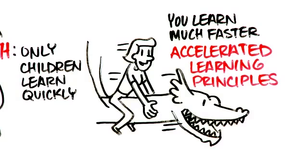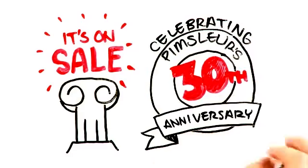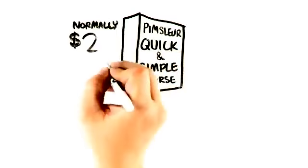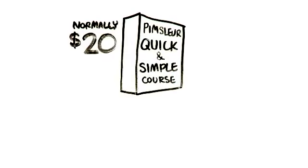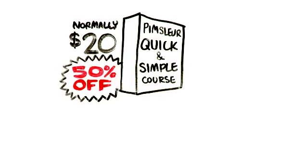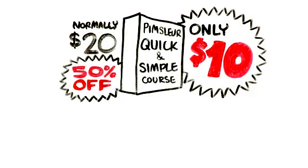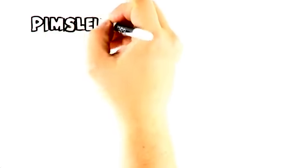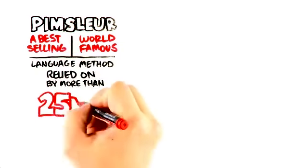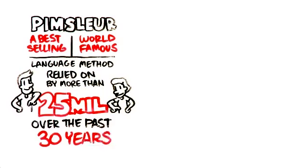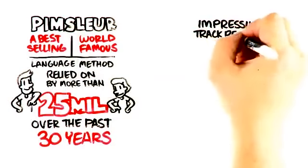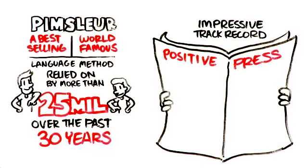Now the most important reason you should buy this course today is that it's on sale. We're celebrating Pimsleur's 30 year anniversary. Normally the quick and simple course is $20. However, today while supplies last, we're offering it to you for 50% off. It's only $10. And we're including free shipping. Open up a new browser, go to this website right now. We have over 16 languages available. It's guaranteed and you have 30 days to try it risk free. Pimsleur is a best selling and world famous language method that's been relied on by more than 25 million people over the past 30 years. And it has an impressive track record.